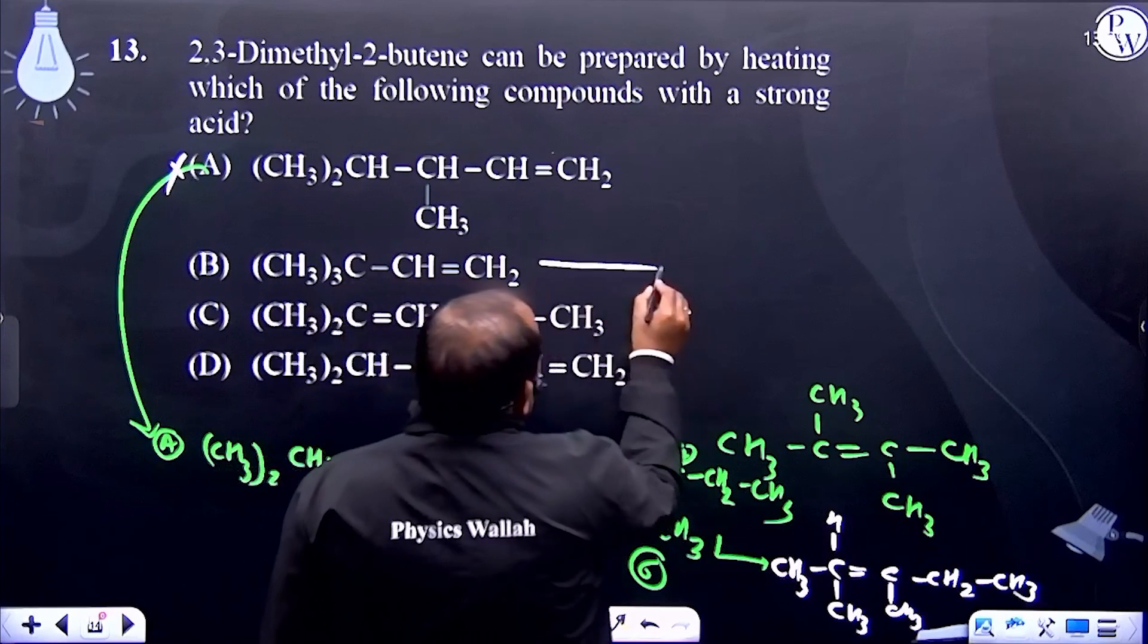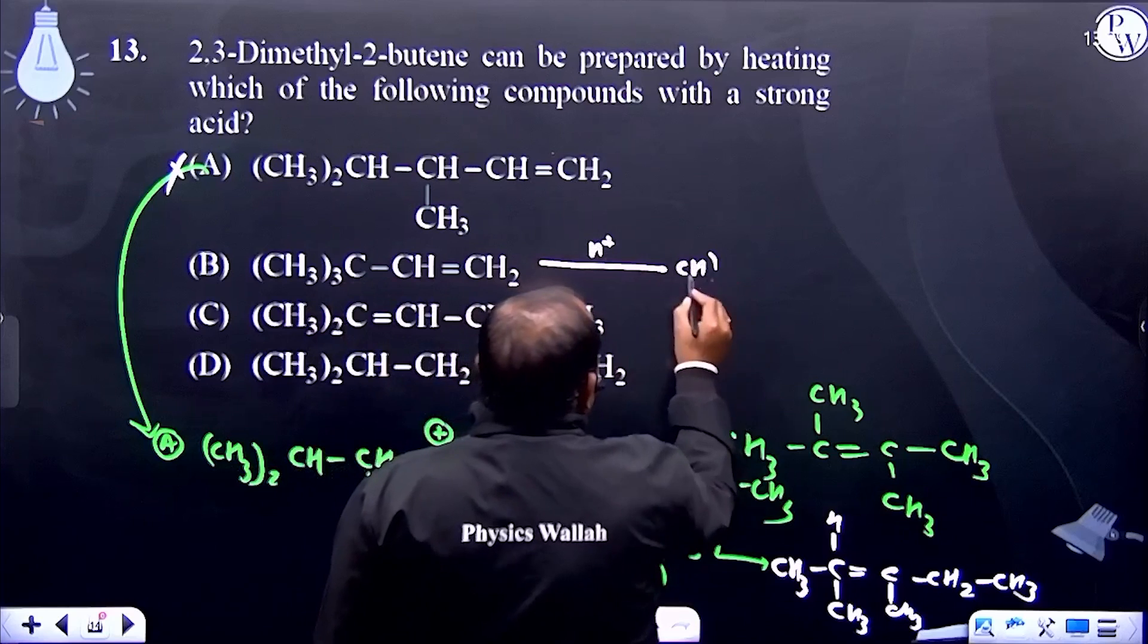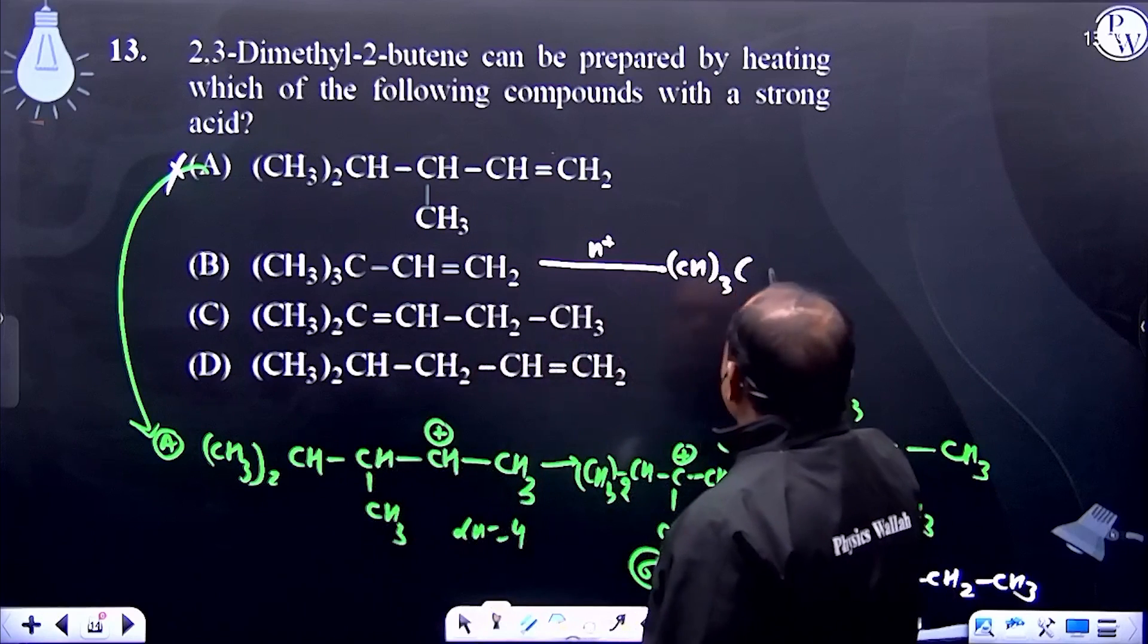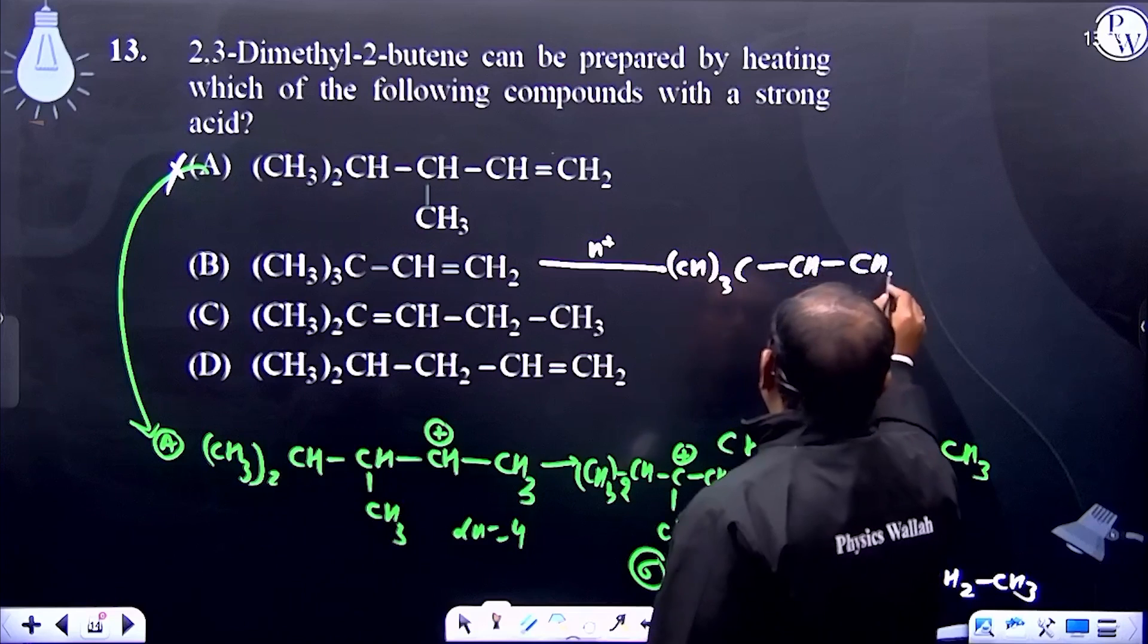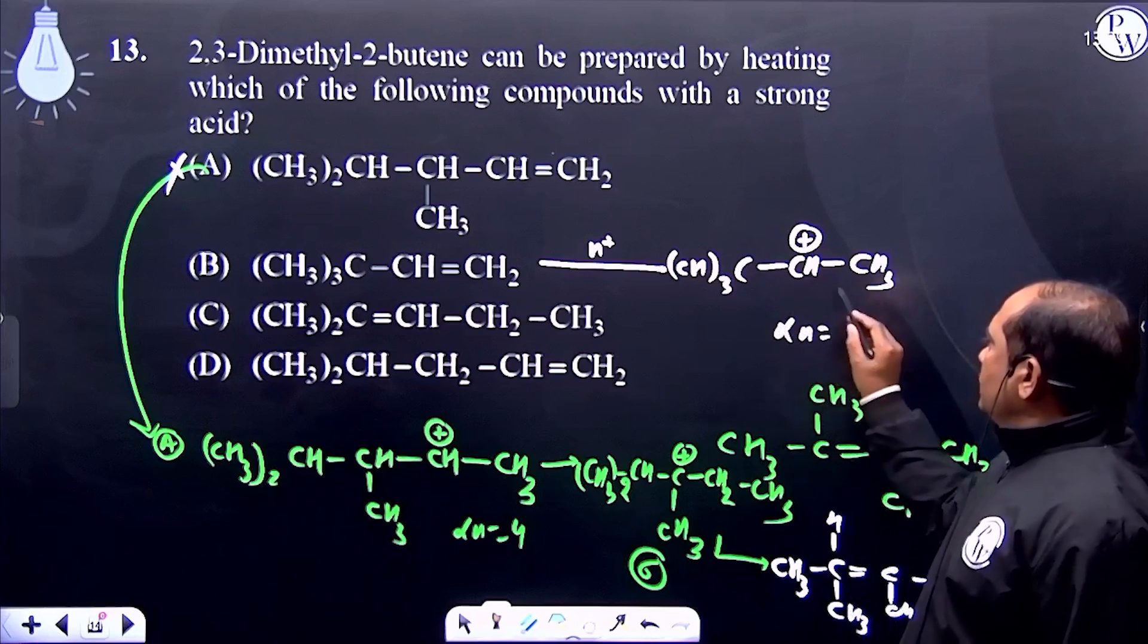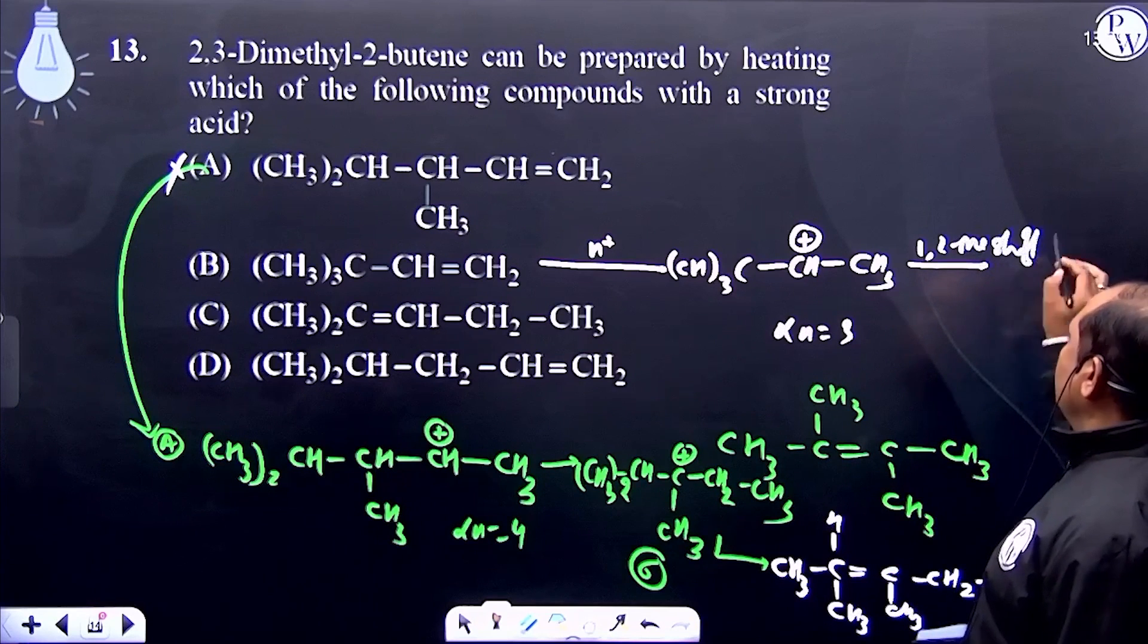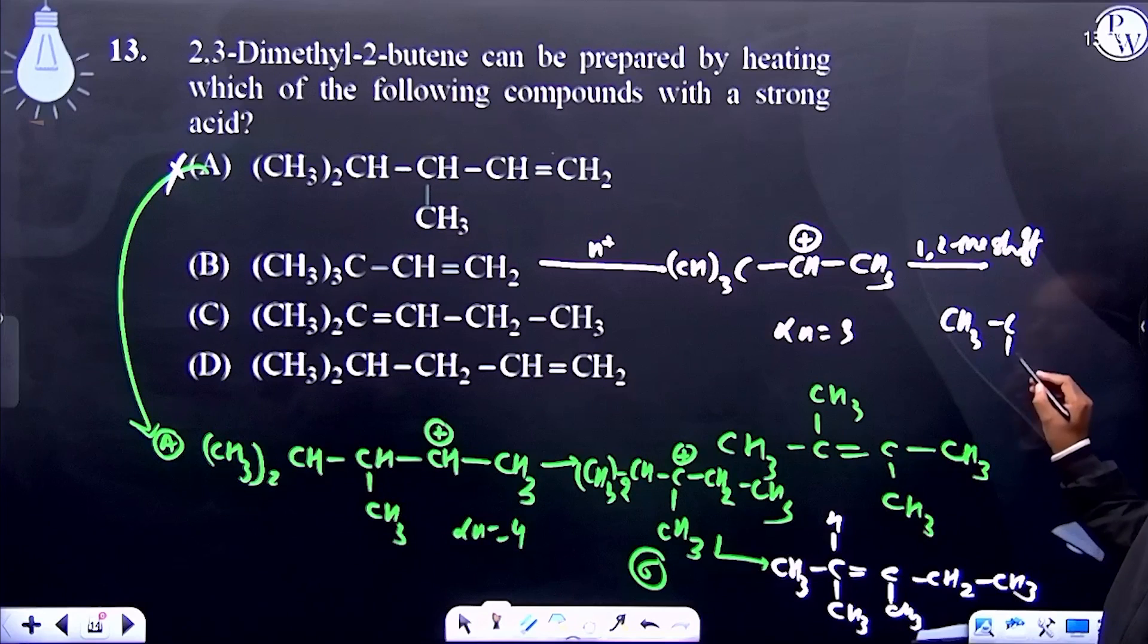Option B: After addition of H+, we get a carbocation. Through 1,2-methyl shifting, we get another carbocation.